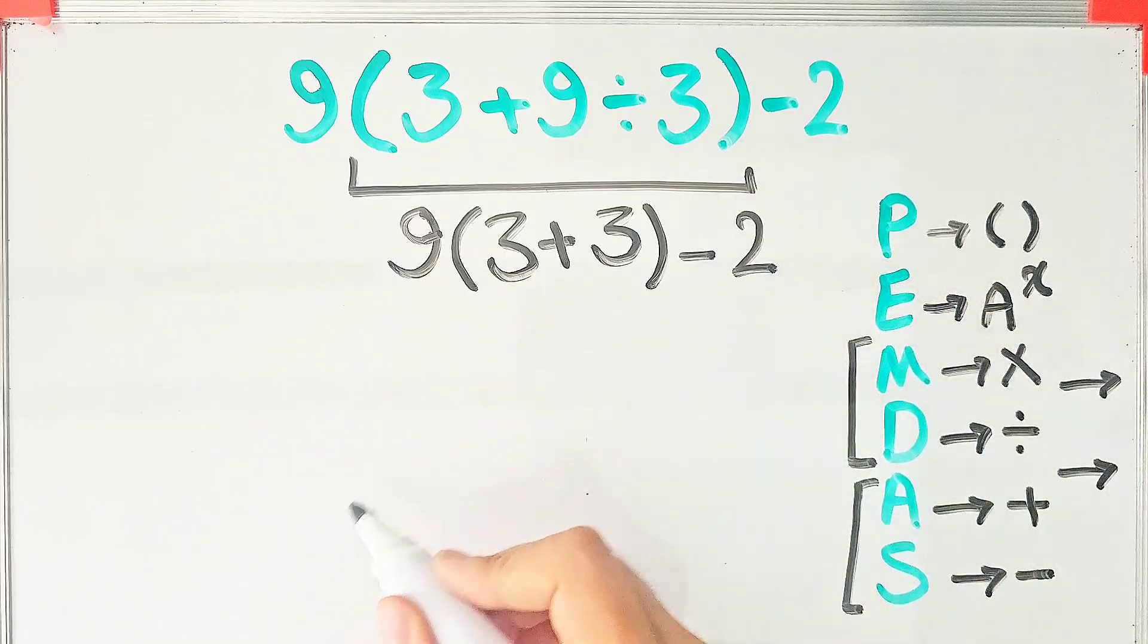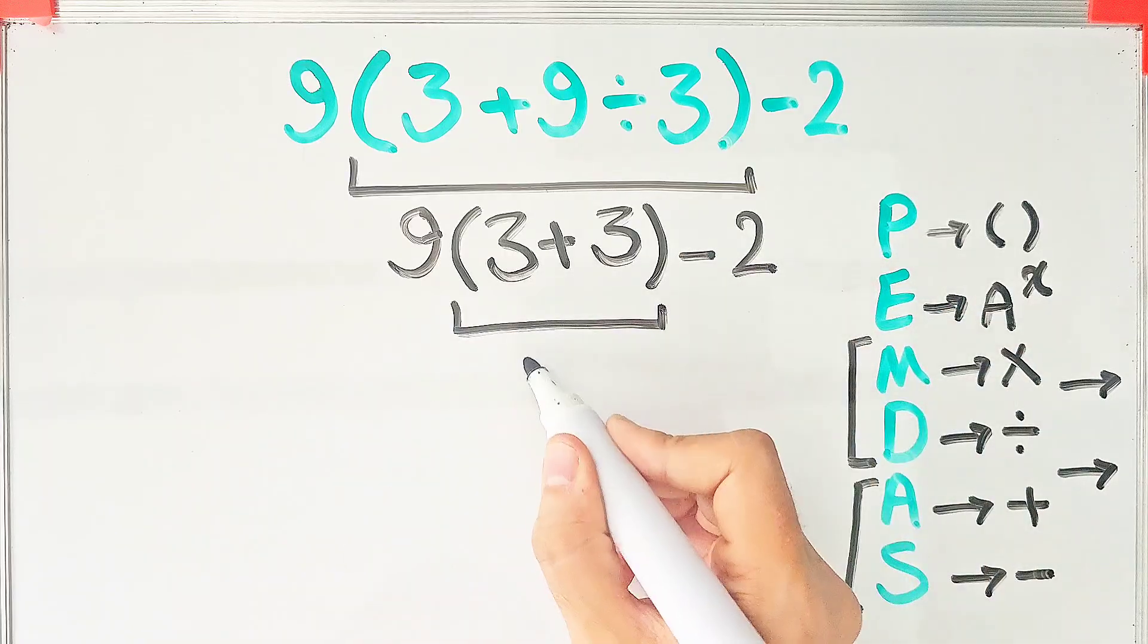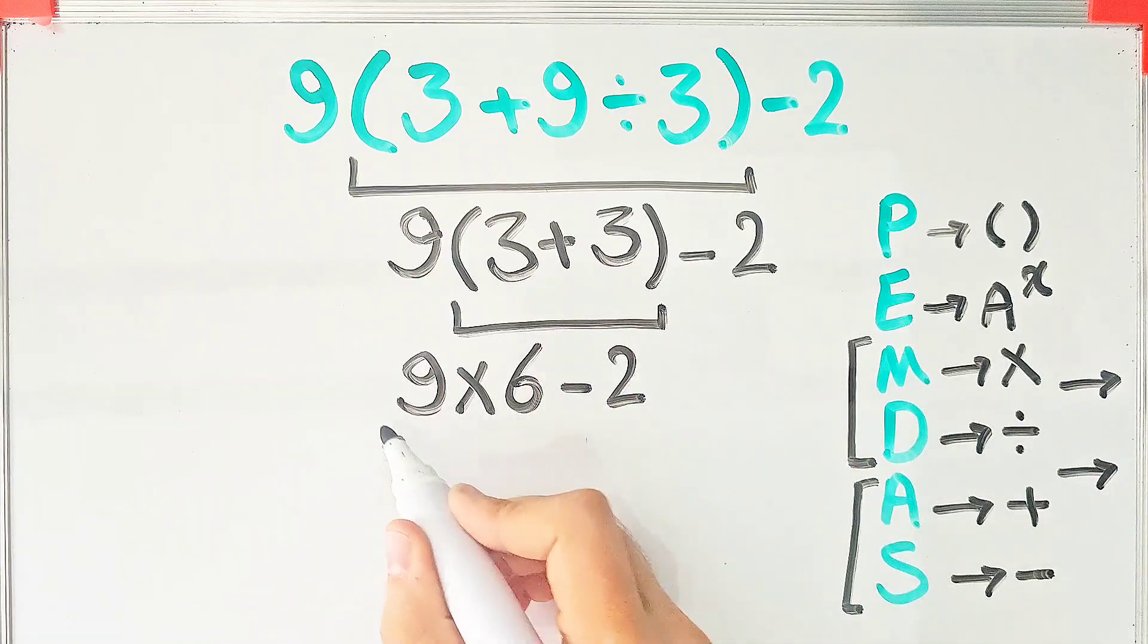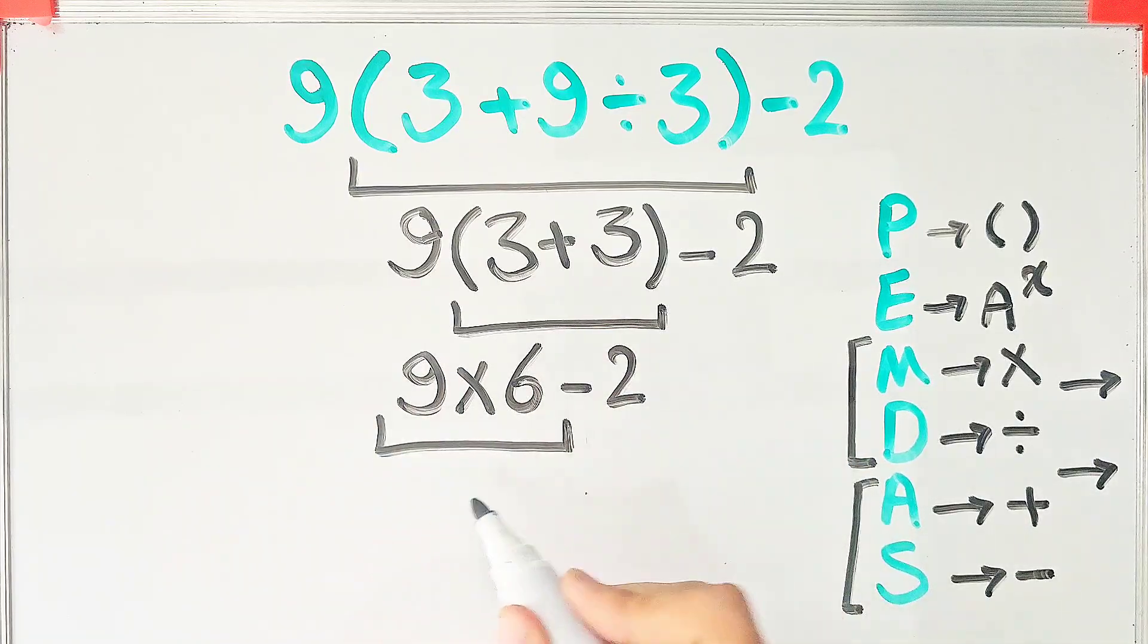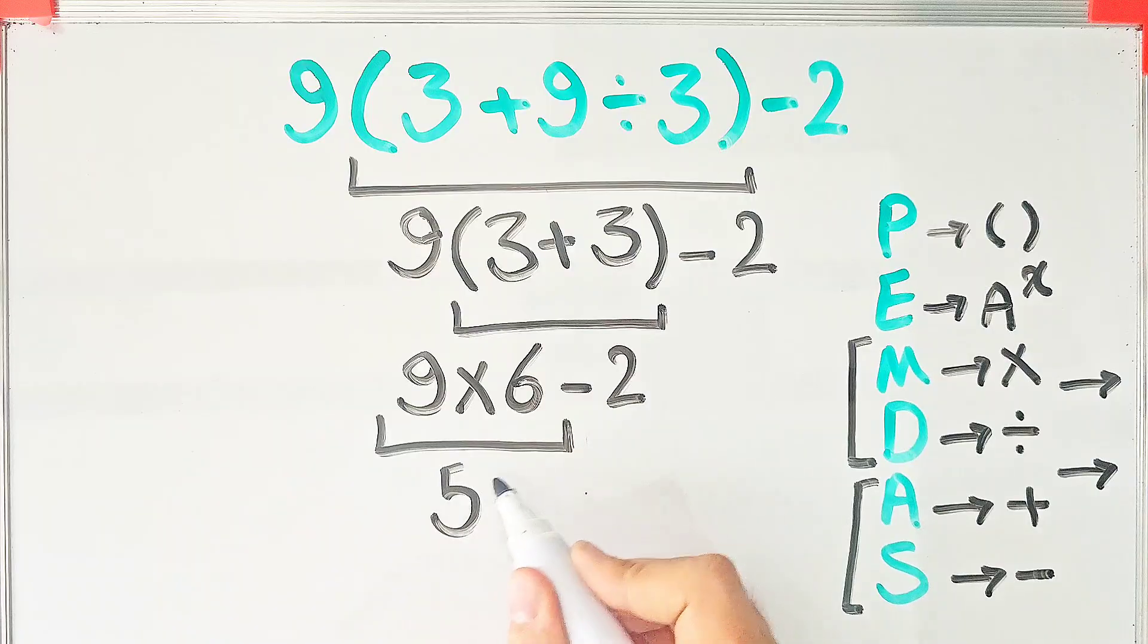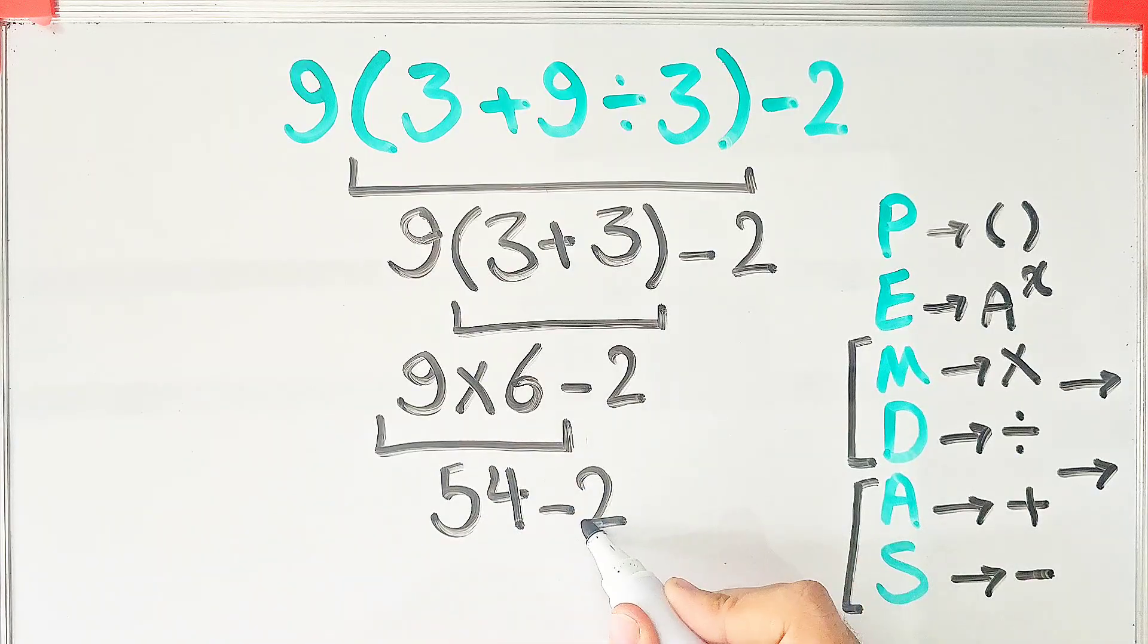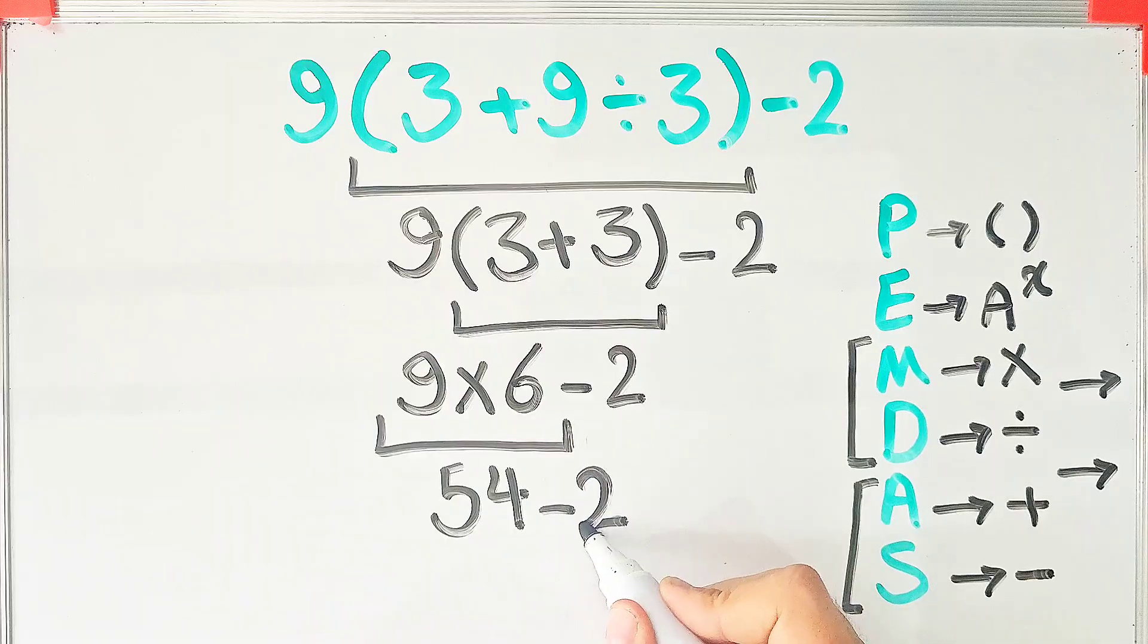Again, we simplify the parenthesis. 3 plus 3 equals 6. We have 9 times 6, then minus 2. 9 times 6 equals 54, and 54 minus 2 equals 52. The final answer of this question equals 52.